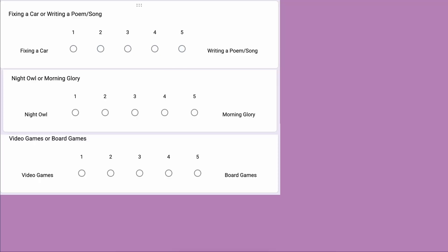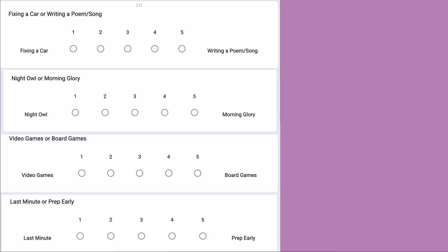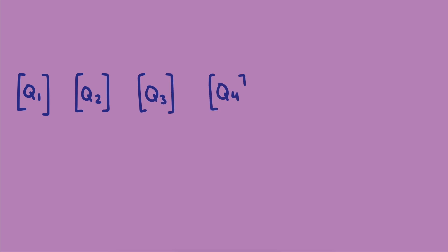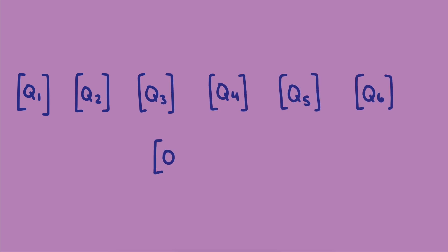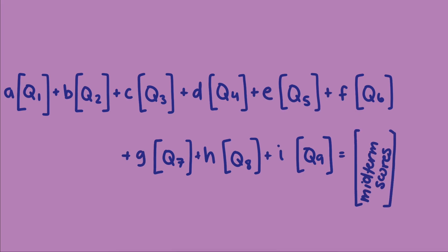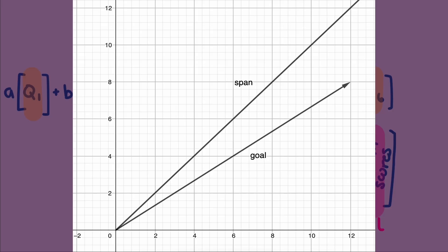Predicting a student's midterm score from their survey items is a kind of problem we've referred to as a best approximation problem. If we think of the answers to each question as a vector, then we can think of this prediction problem as trying to find the linear combination of the question vectors that creates a new vector that is the best approximation to the midterm vector. All best approximation problems have this same structure: we have a set of vectors that we can call basis vectors, which we use to get the closest to the goal vector. Geometrically, we're trying to find the point in the span of the basis vectors that is closest to the goal vector.